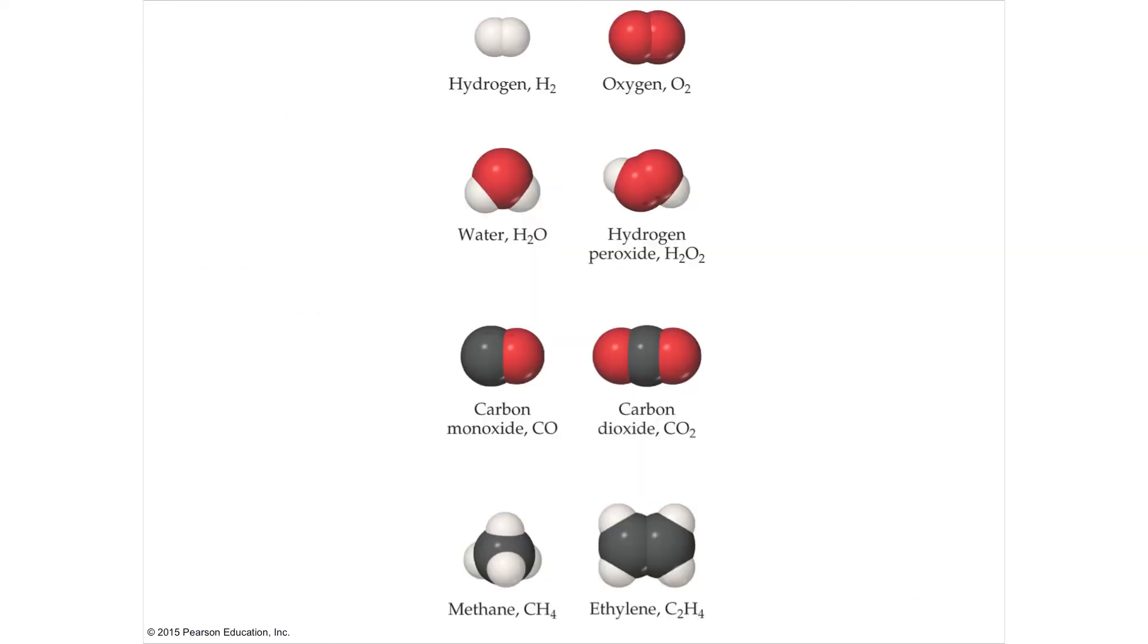So here's some space-filling models of various things. Carbon monoxide, that's one carbon, one oxygen. The red here is oxygen. Carbon dioxide, two oxygens. So you're going to see that there's some special ways to name them. Also, they can configure in different ways. You can have hydrogen and oxygen configured as water. Or hydrogen and oxygen can configure as peroxide.